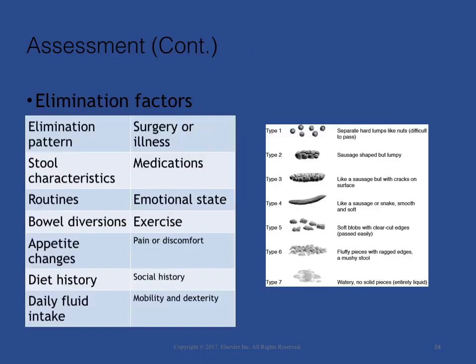Organize the nursing history around factors that affect elimination. Ask the patient about their elimination patterns such as frequency and time of day, stool characteristics and routines, any bowel diversions, appetite changes, and daily fluid intake. Ask about diet history and history of surgery or illness. Inquire about past social history, current emotional state, and any pain or discomfort. Ask for a list of all medications — including laxatives, antacids, iron supplements, and analgesics — that alter defecation or fecal characteristics. Assess whether mobility requires assistive devices. Review the Bristol Stool Form Scale as shown in Figure 47-6.